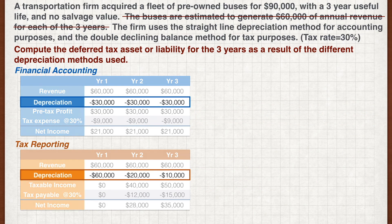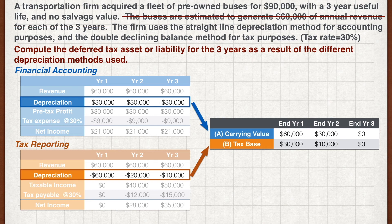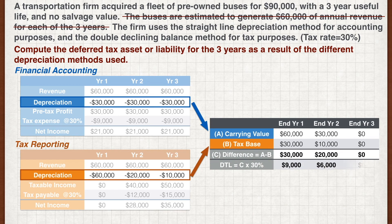For this method, we first calculate the depreciation expense under financial accounting to get the ending carrying values for each year. Next, we calculate the depreciation expense under tax reporting to get the ending tax base for each year. The ending tax base is the historical cost minus the accumulated depreciation. The deferred tax liability is simply the difference between the carrying value and the tax base, multiplied by the tax rate. We get a deferred tax liability of $9,000 in the first year, $6,000 in the second, and $0 in the third — identical to what we calculated using the earlier method.